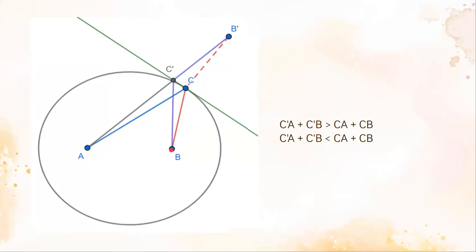Now we have a contradiction because it can't be both greater than and less than at the same time. Remember that this contradiction only happens when A, C, and B' aren't collinear. This means that the only possibility is that A, C, and B' are collinear.